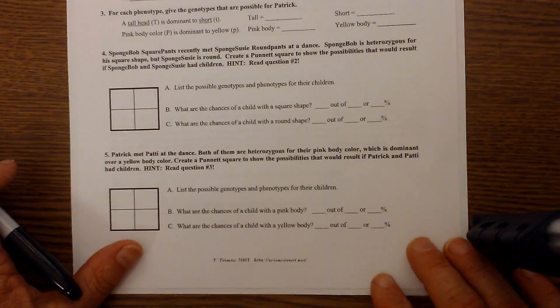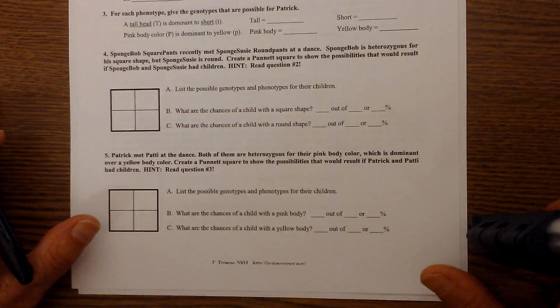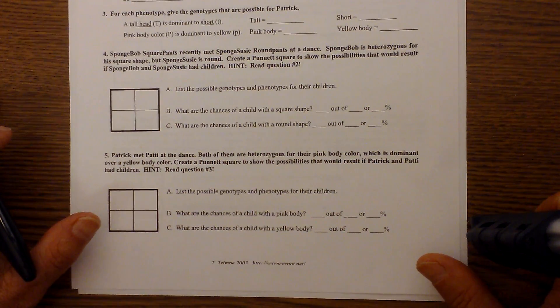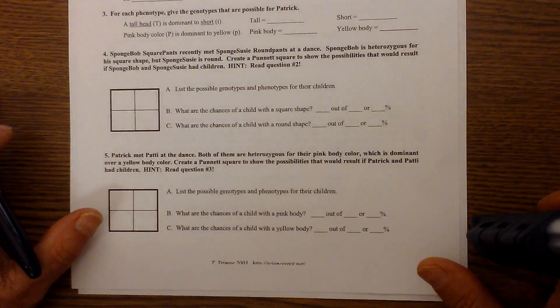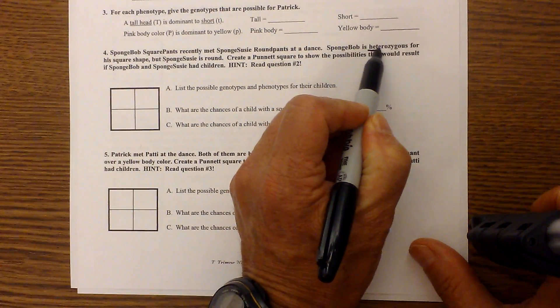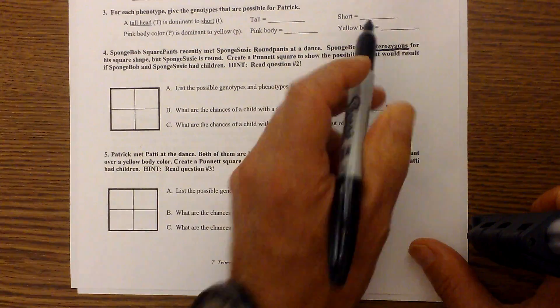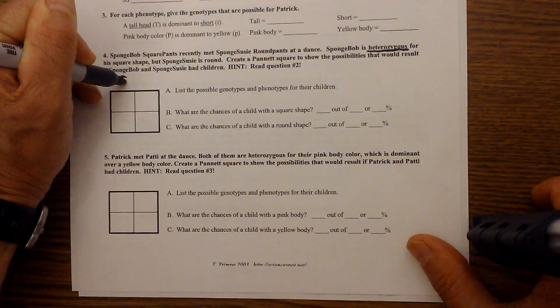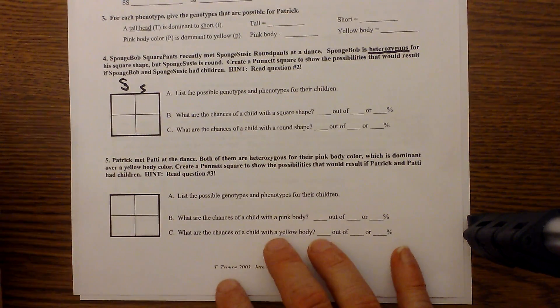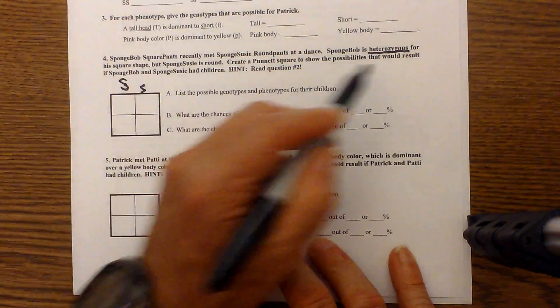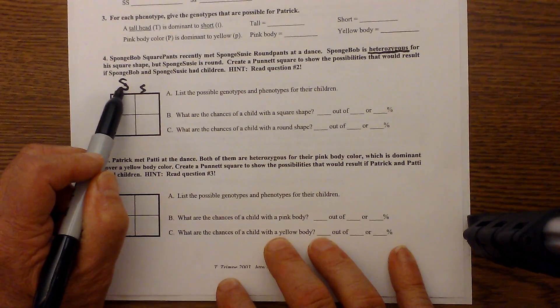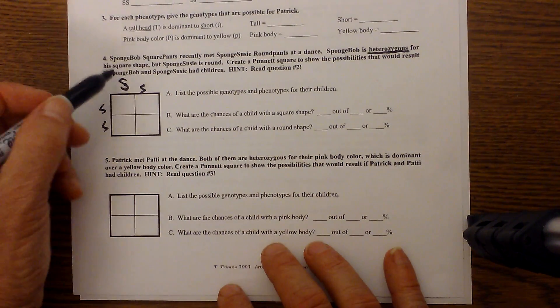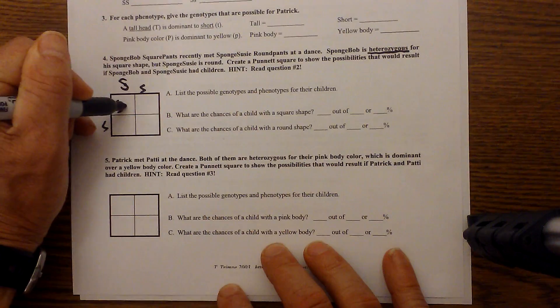So now let's move down to an actual Punnett square and get started with that. It says SpongeBob SquarePants recently met Sponge Susie RoundPants at a dance. SpongeBob is heterozygous for his square shape, but Sponge Susie is round. Create a Punnett square to show the possibilities. So a couple of things that I'm going to underline. We know that SpongeBob is heterozygous. So that's going to tell us that's what the dominant trait is. So let me write it and I'm going to use S. Remember we write homozygous, two different letters. So it will be big S, little s. And then Susie is round. So since we have a capital letter here, we know that square is dominant. And so round will be recessive. And so we have a capital letter, lowercase. And then so now I will fill in the boxes.